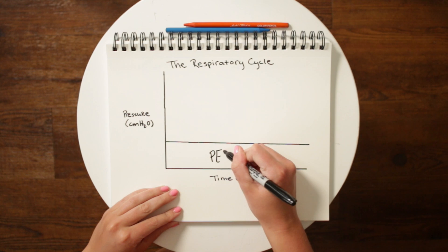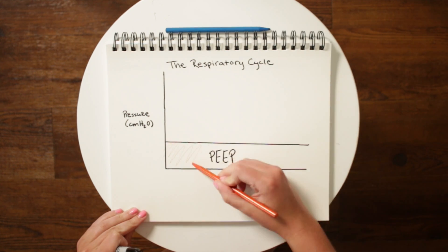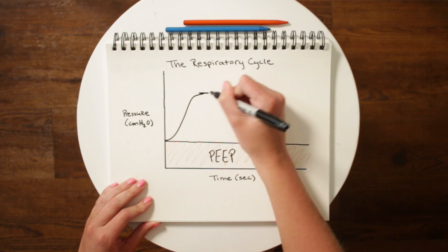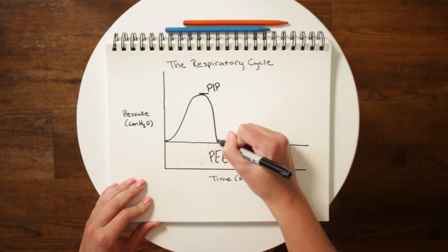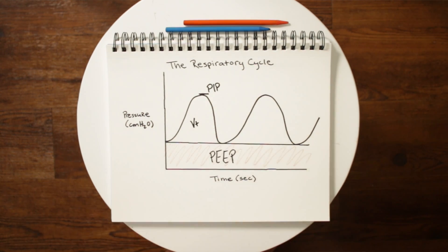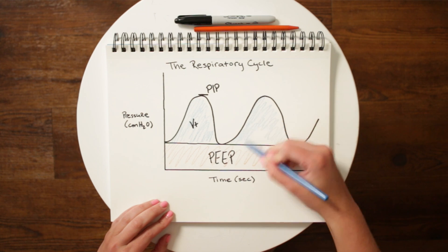On the y-axis we have pressure measured in centimeters of water, and on the x-axis we have time measured in seconds. You can see that PEEP is the baseline amount of pressure left in the lungs after exhalation. When the patient takes a breath, the PIP is the highest level of pressure reached during inhalation. The tidal volume is the amount, or volume, of air delivered to the patient with each breath.